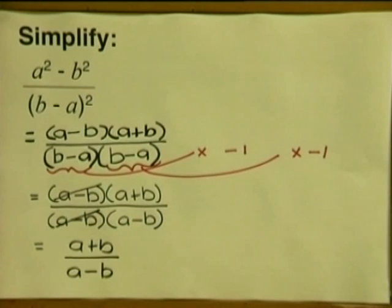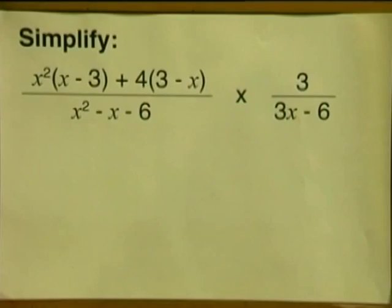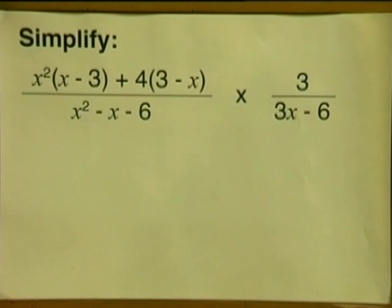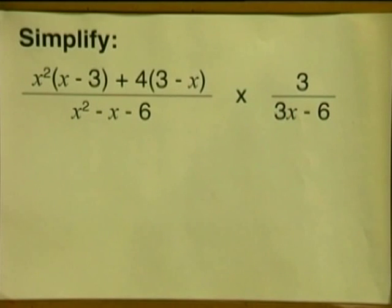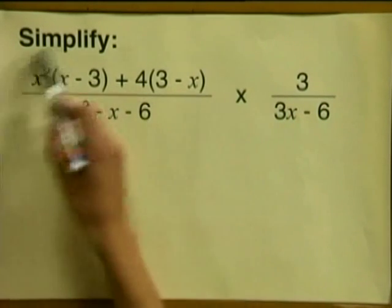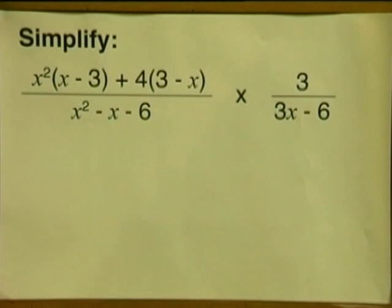And this is our final answer. That wasn't difficult. Let's do one more example. Simplify x squared multiplied by x minus 3, plus 4 multiplied by 3 minus x, all divided by x squared minus x minus 6, multiplied by 3 divided by 3x minus 6. Now you should recognize that the fraction on the left hand side is from a previous task.